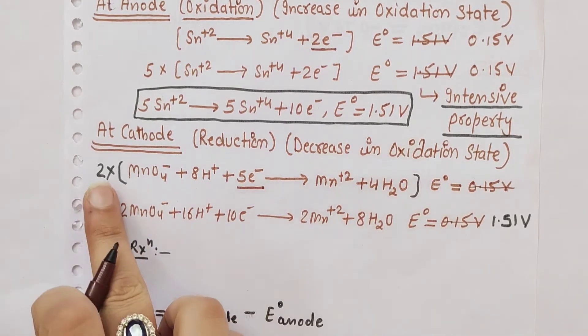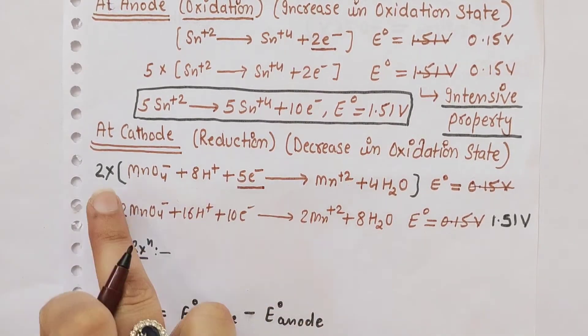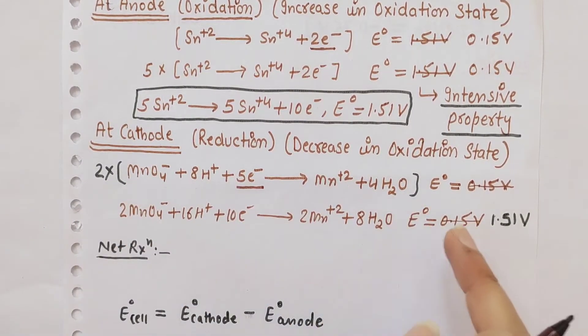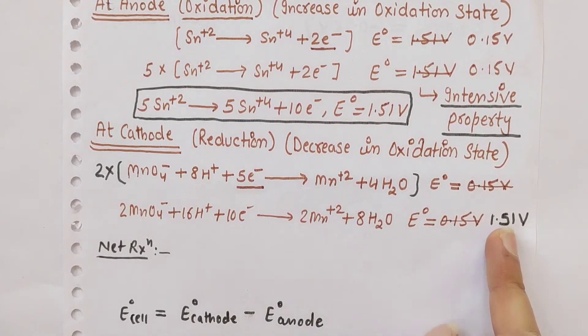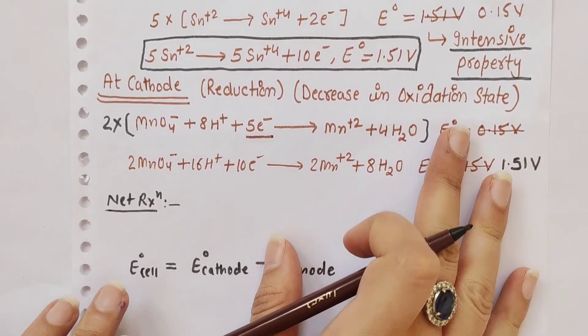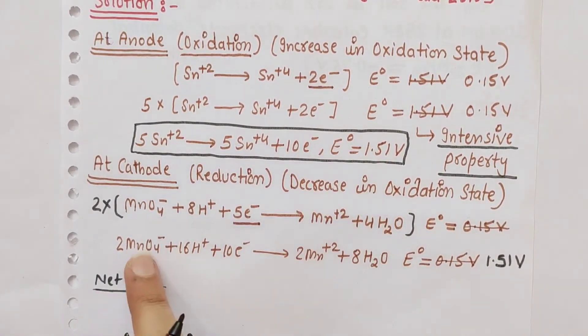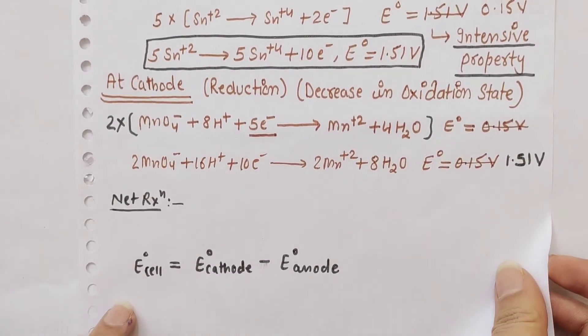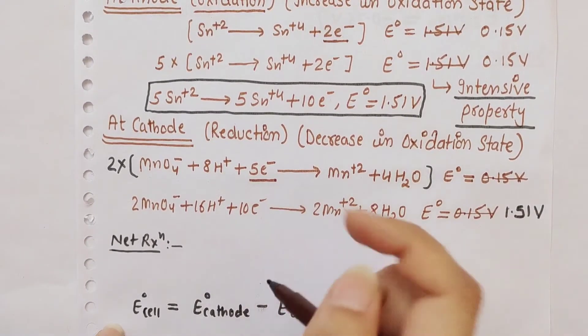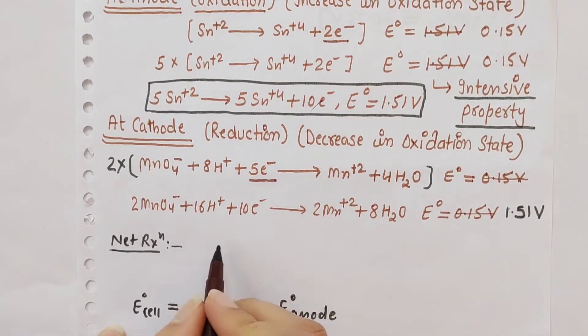For the net reaction, we combine both equations. The 10 electrons on both sides cancel out. The net redox equation becomes: 2MnO₄⁻ plus 16H⁺ plus 5Sn²⁺.